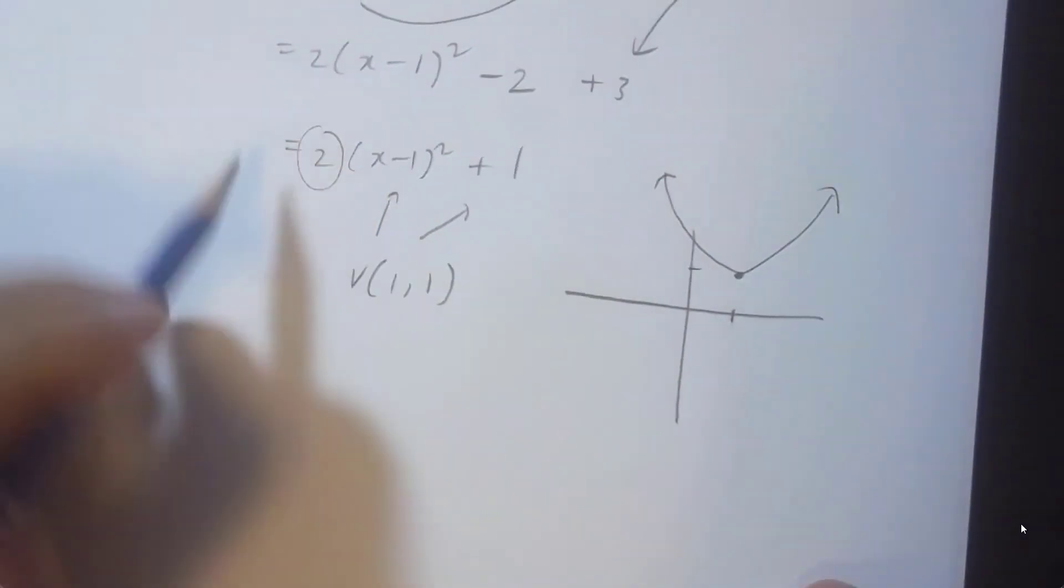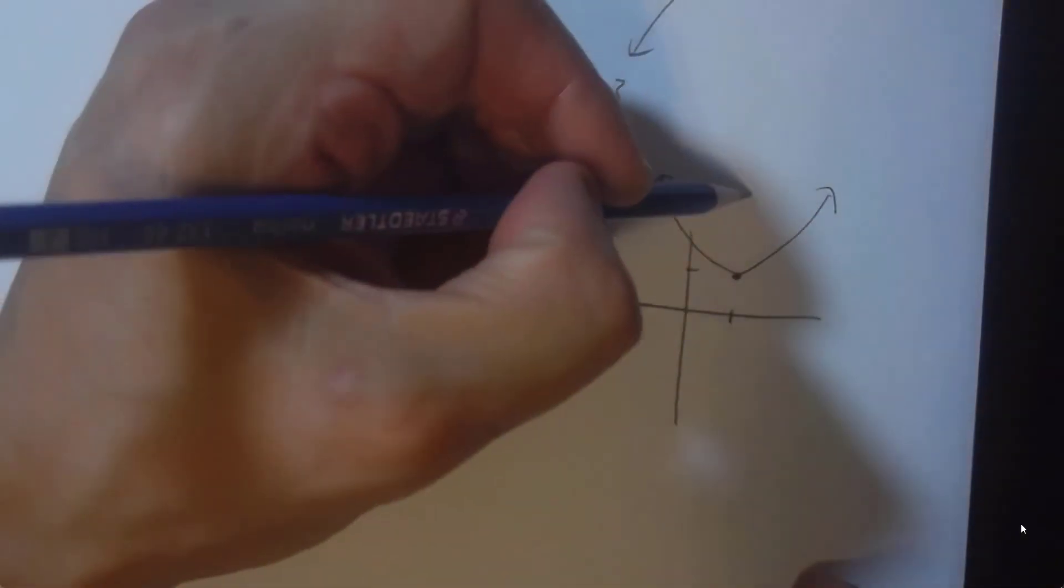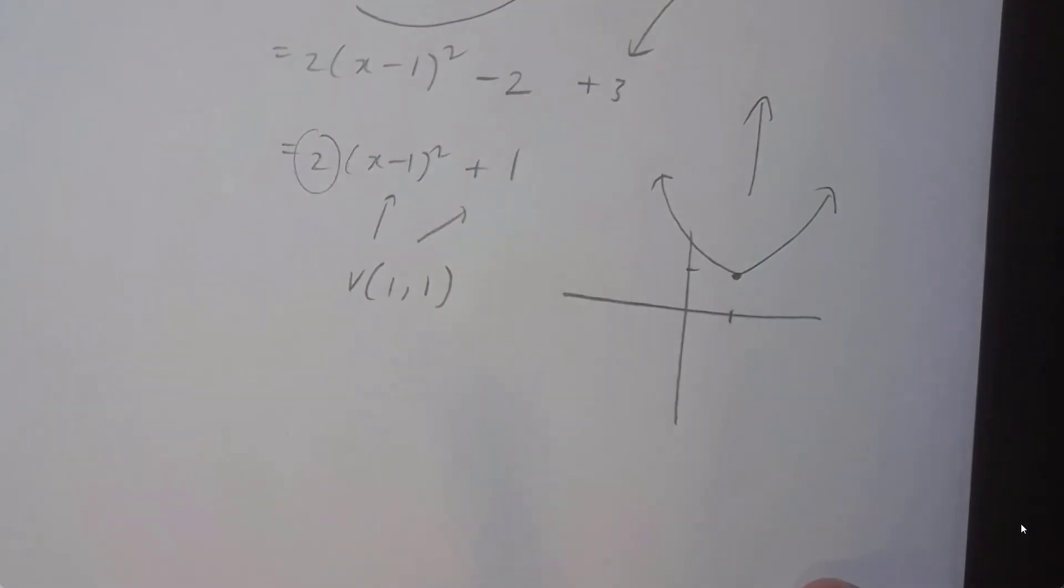Now notice how the a value here, the a value is also here, is a positive number. It's not 1, it's 2. So this graph here is a bit more stretched vertically, more so than usual.